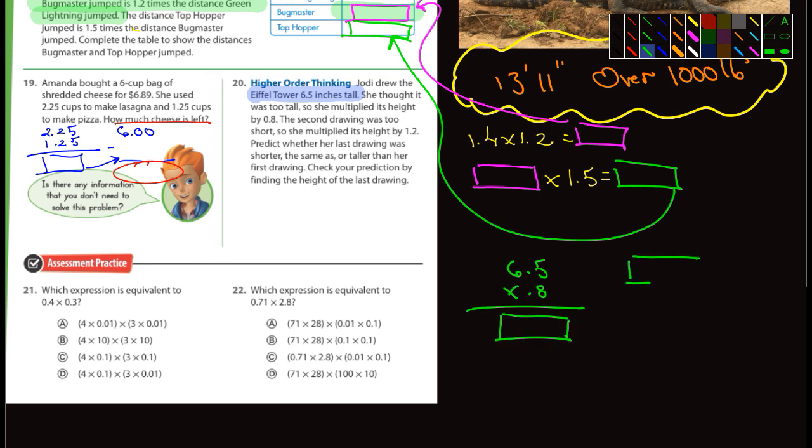And then the second drawing was too short, so she multiplied its height. So whatever your answer is, here's your answer, there's your answer, these are one and the same. You're going to multiply that answer by 1.2, times 1.2. And then you'll get another answer. Let's see here. Check your prediction by finding the height of the last drawing. So this is what we're looking for here, the height of this one. But remember you have to do this one first, and that one goes there, and then you'll multiply that one, whatever that answer is, by 1.2.